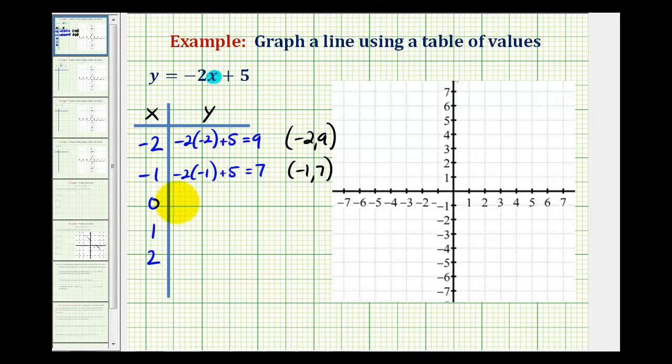And then when x is zero, we'd have negative two times zero plus five. That's going to be five. So the line should contain the point zero, five.